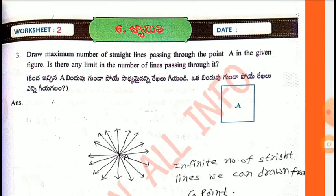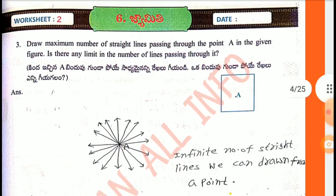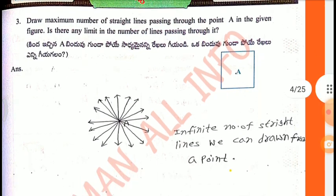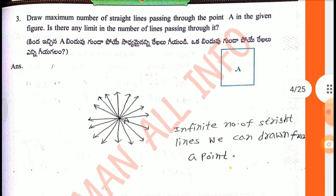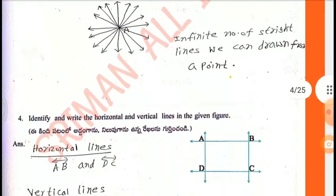Worksheet 2, Third one: Draw the maximum number of straight lines passing through point A in the given figure. Is there any limit in the number of lines passing through it? We can draw an infinite number of straight lines from point A.